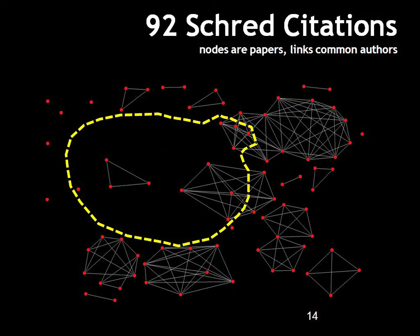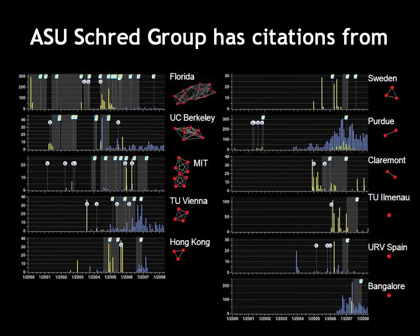We can hone this in further to ask what are these papers citing. Here's a nice network dealing with 92 citations that cite Schred — the tool that does Poisson-Schrödinger. There's a really nice network developing outside of the NCN. This is a tool that was created originally by Dragica Vasileska at Arizona State, and we can look at how this tool is being used at many places: Florida, Berkeley, MIT, Vienna, Purdue. What we plot here are the papers as they show up, and we have spikes of activity before these papers are written. So we can say these people are using NanoHub for their research, and the outcomes are the papers.